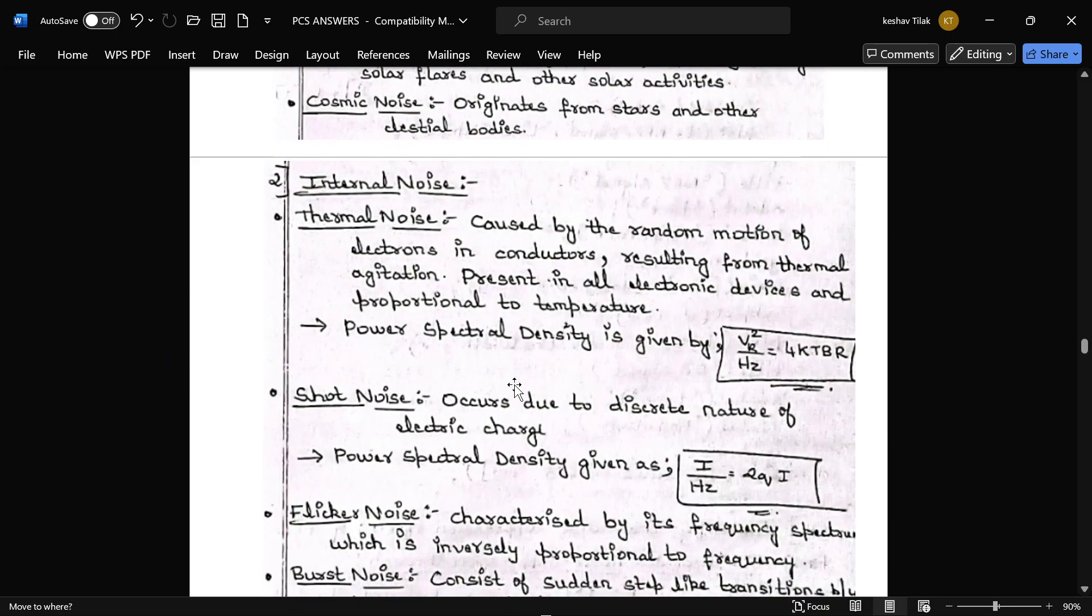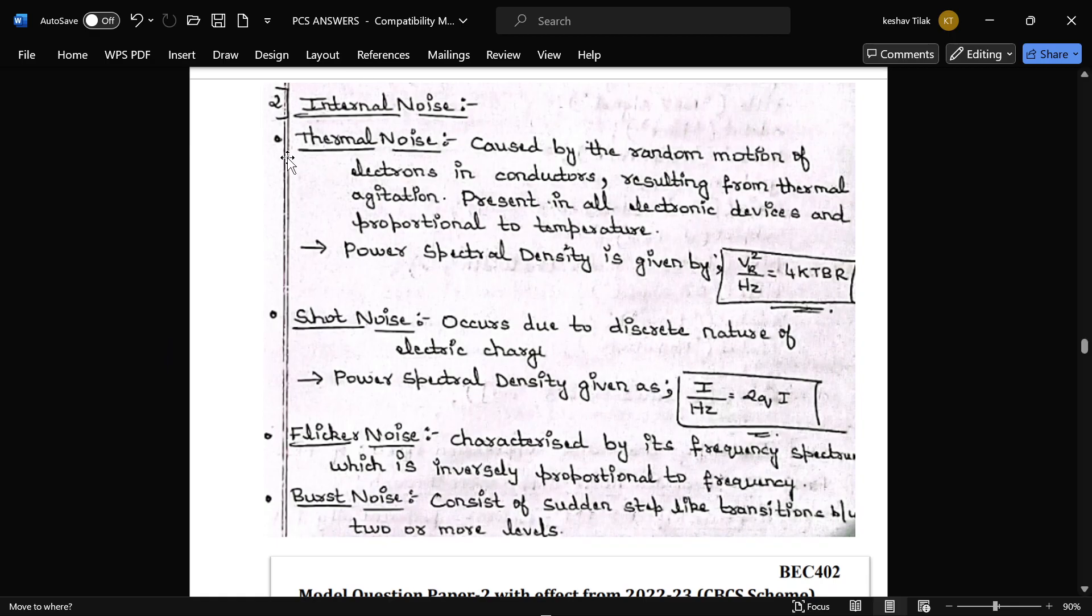Next is internal noise. In that thermal noise caused by random motion of electrons in conductors resulting from thermal agitation. Presence in all electronic devices and proportional to temperature. If the temperature is high then thermal noise will be high.